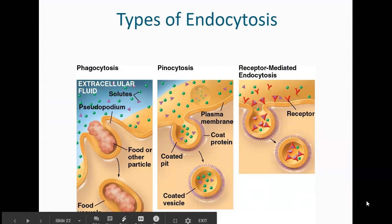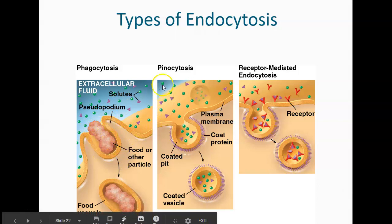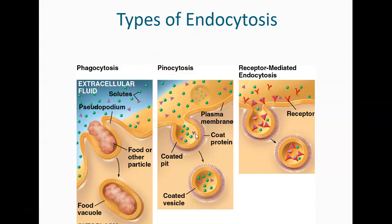Types of endocytosis get special names depending on what's being brought in. Phagocytosis — 'phago' means eating — is cell eating: consuming food or other particles. Pinocytosis is cell drinking — taking in other solutes in the liquid, coating them and forming a vesicle. Receptor-mediated endocytosis involves receptors on the cell surface waiting to be triggered. When enough are triggered, the cell brings them in to prevent overstimulation.